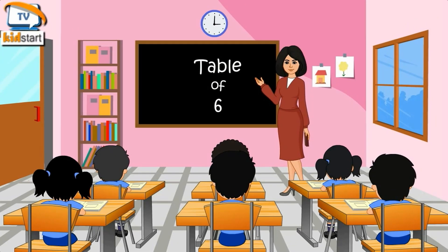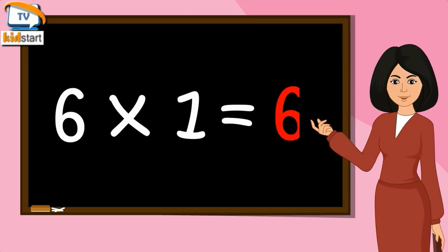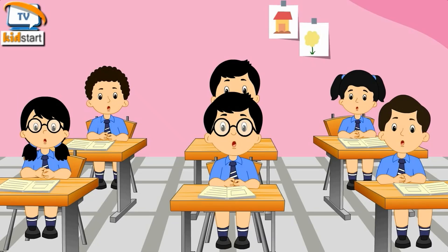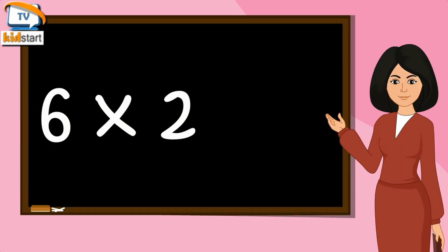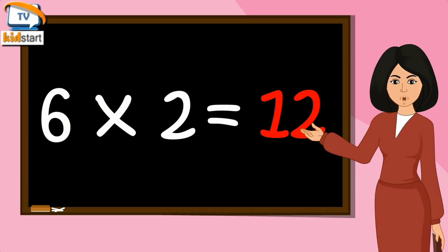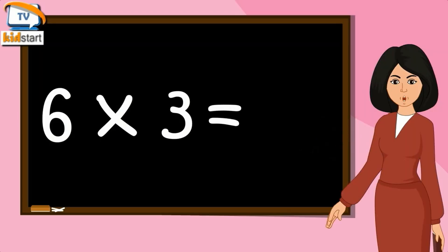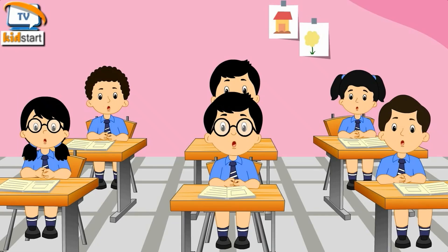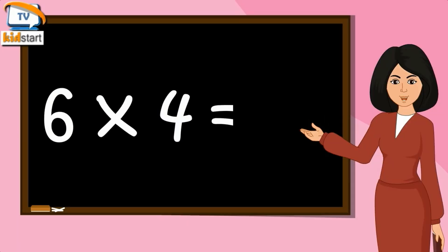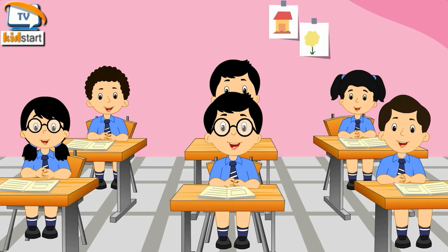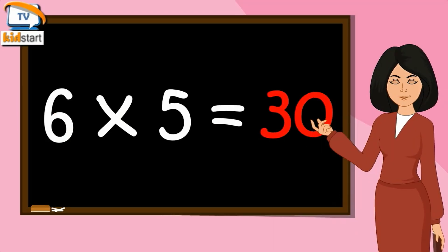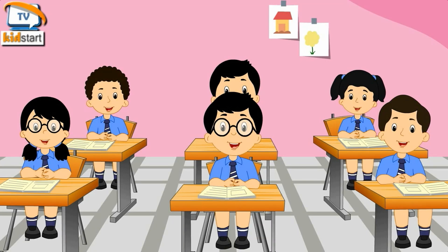Table of 6. 6 ones are 6, 6 ones are 6. 6 twos are 12, 6 twos are 12. 6 threes are 18, 6 threes are 18. 6 fours are 24, 6 fours are 24. 6 fives are 30, 6 fives are 30.